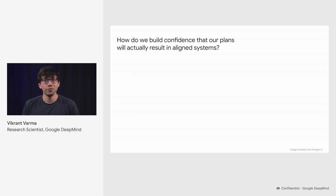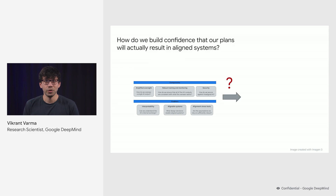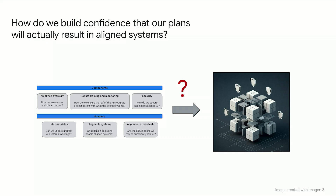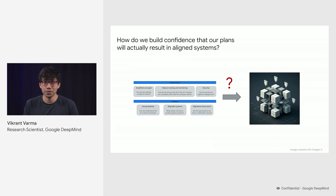How do we build confidence that our plans will actually result in aligned systems? Every time we see an alignment failure during training, we make changes to our plans until the failure goes away. However, the core difficulty is that we don't know whether our AI is actually more aligned or whether it has simply learned to hide its misalignment during training.